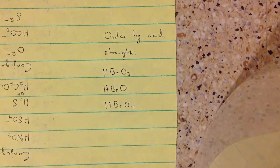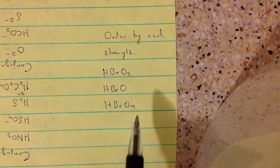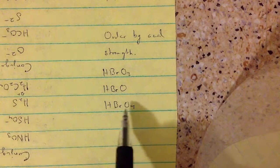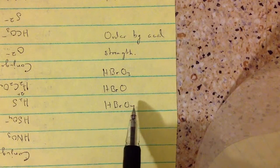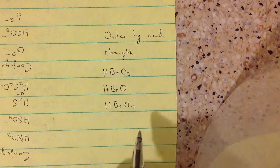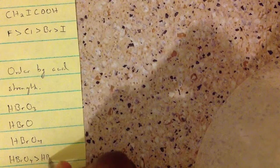Based on that, the more oxygens, the stronger the acid. So we can say that HBrO₄ will be the strongest, then HBrO₃, then HBrO.